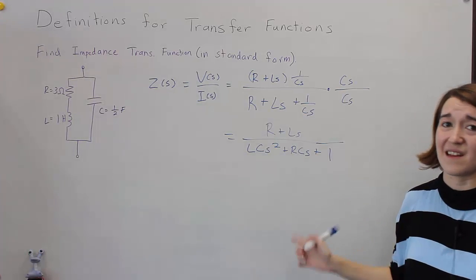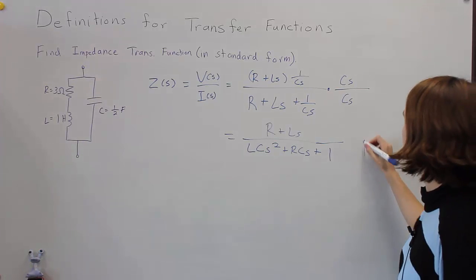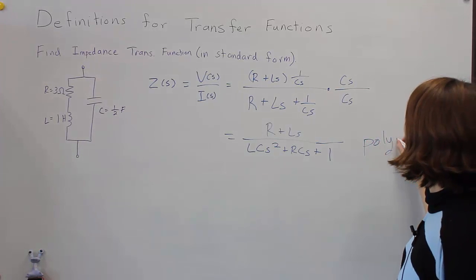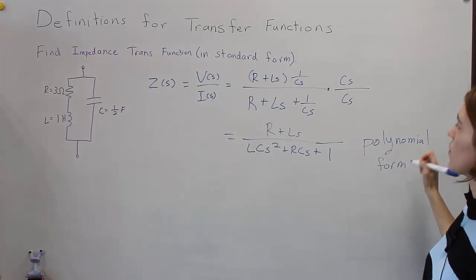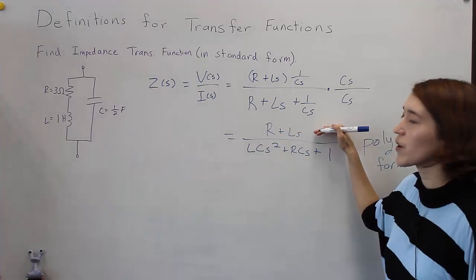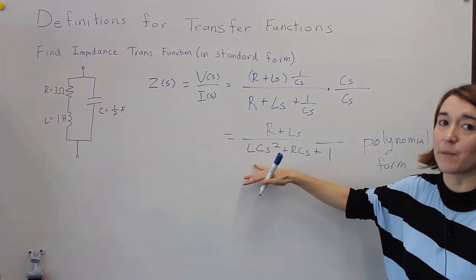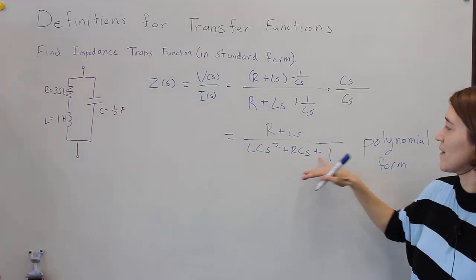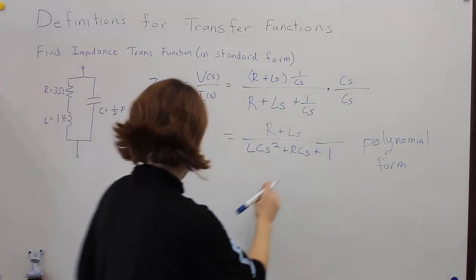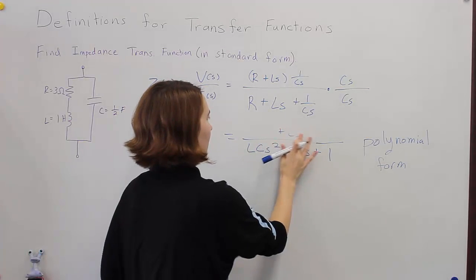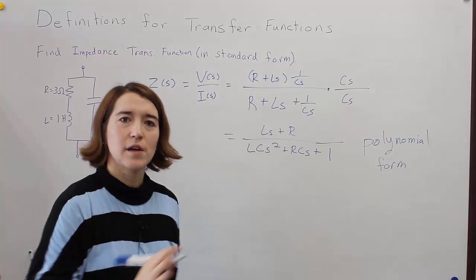Valerie says this is still not in standard form — this is what we call polynomial form. In polynomial form, the numerator and denominator are each a polynomial of S, having terms S squared, S, and a constant. We should also reorder, so the numerator becomes Ls plus R for the proper polynomial ordering.